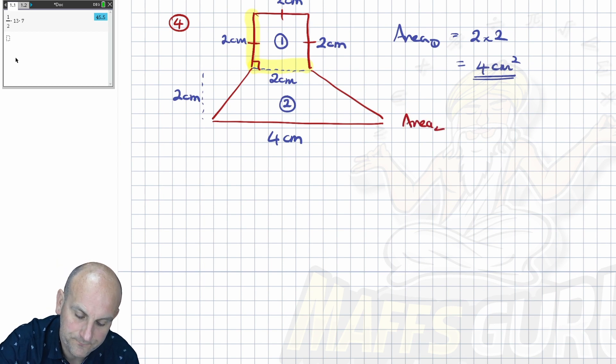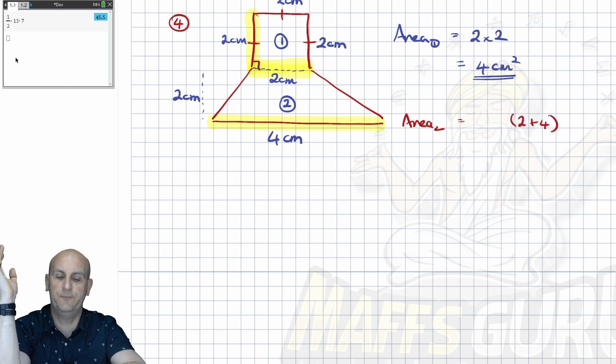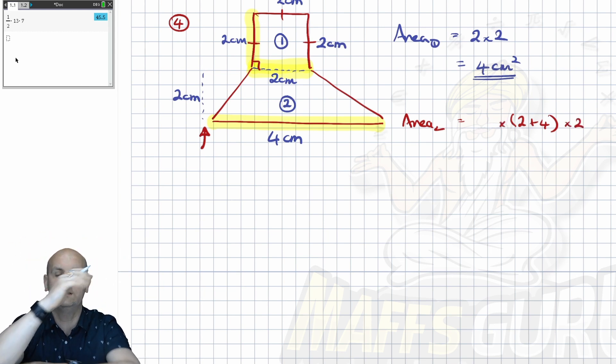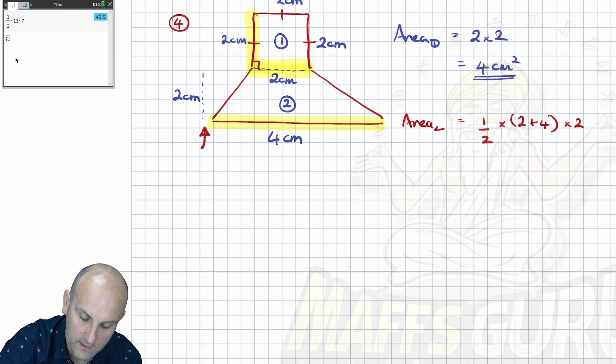Area two is going to be a trapezium. So what do we do? We add the parallels. Well, that's one of my parallels and there is another one of my parallel. Those are the two parallels I can see. So that's two plus four. Add times by how far apart they are. How far apart are they? Oh, look. They've given me that measurement there. That's the height. So times that by two. And we know that once we do this, we then halve it. So halve it. Let's do the brackets first.